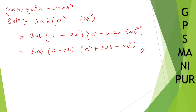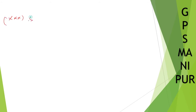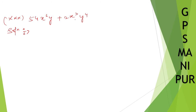Let us do the last question, roman number 30. We have 54x to the power 6 y plus 2x cubed y to the power 4. Now for the solution: 54 is not the cube of any number, and 2 is also not the cube of any number, so we need to factor out common terms to make cubes.